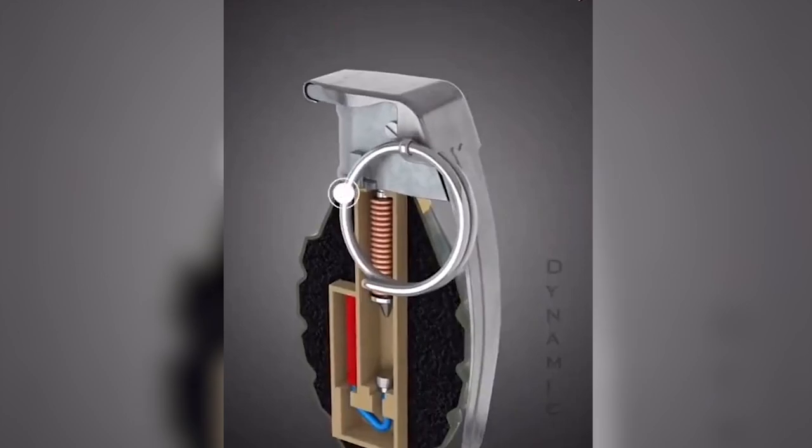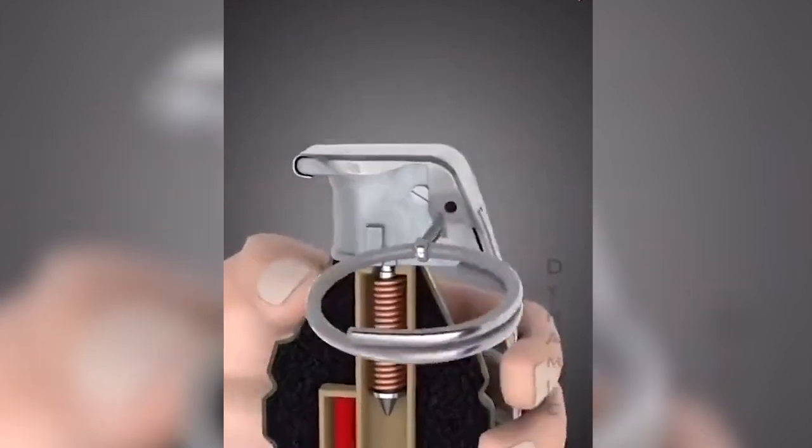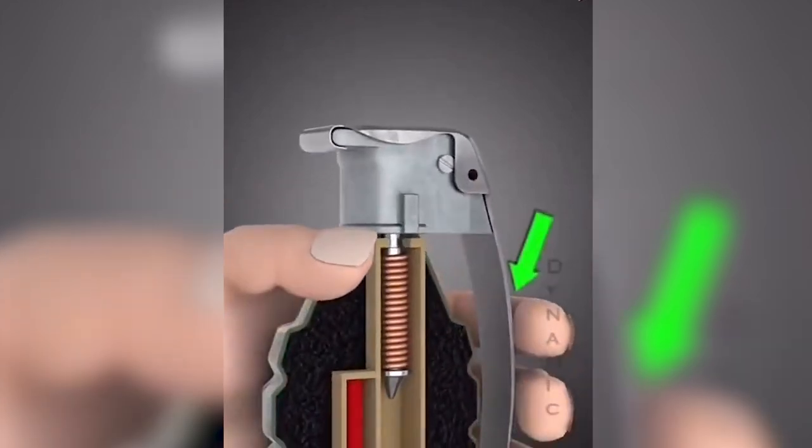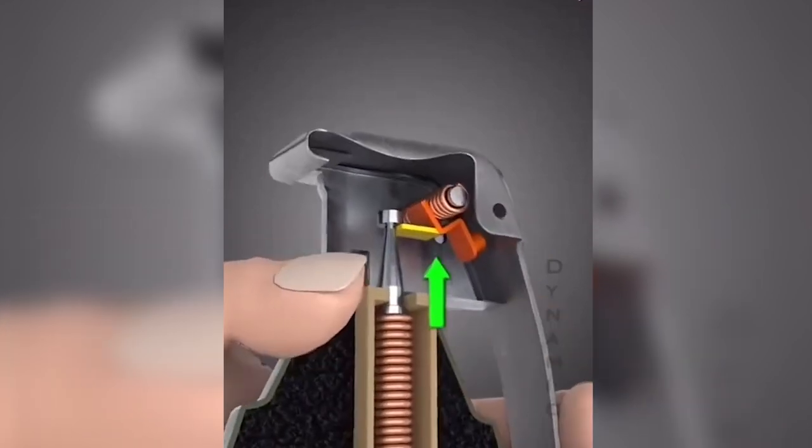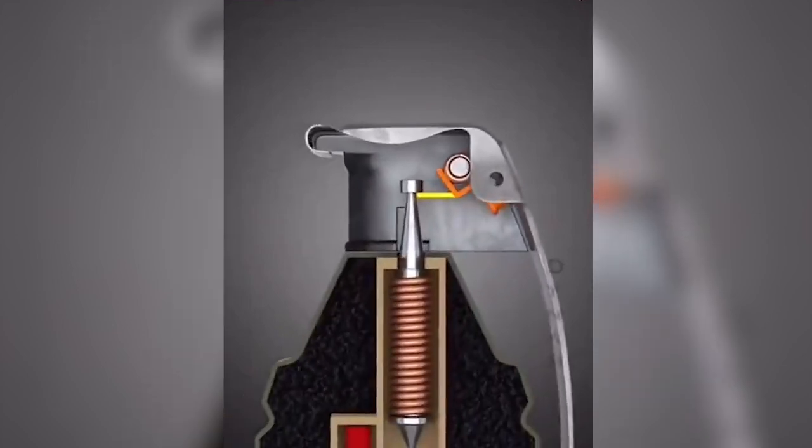Components: Body - Usually made of metal or plastic, designed to contain the explosive material. Explosive filler - The explosive substance inside the grenade, often made of TNT or a similar compound.